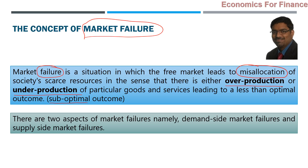How can market failures happen? There can be two sides: a demand-side market failure or a supply-side market failure. Both are possible. In any economy, both sides have to be looked at. For example, if there is overproduction, what happened? A lot of production — supply is more — but demand is not there.